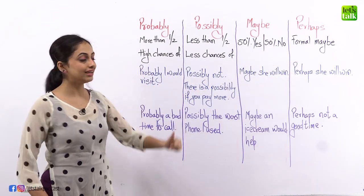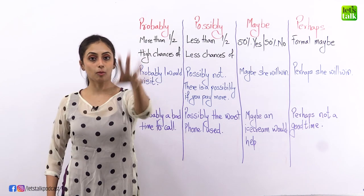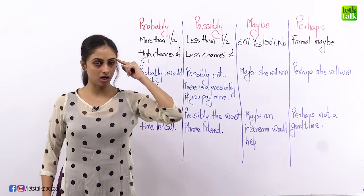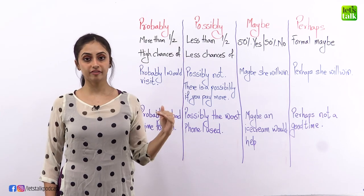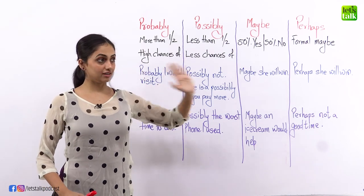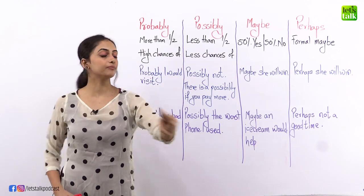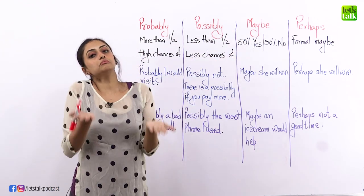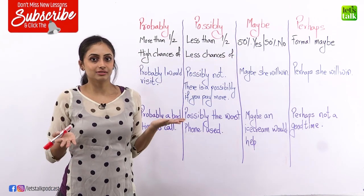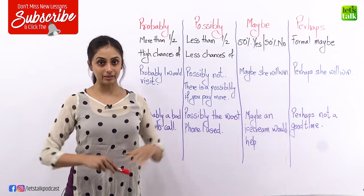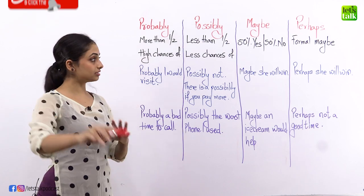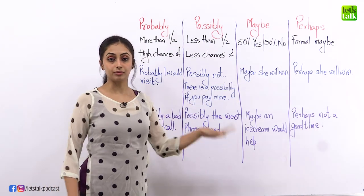Now are you clear with the first confusion? Quick revision. High chances of something happening is probably, probably, probably, remember. Possibly means less than half, less than 50% of chances of anything happening, that's possibly. Maybe, who knows, 50-50, and perhaps is a formal maybe. Now that I've cleared that doubt, let's get to sentences and examples.